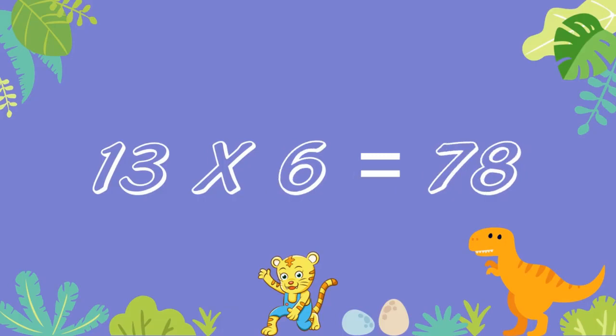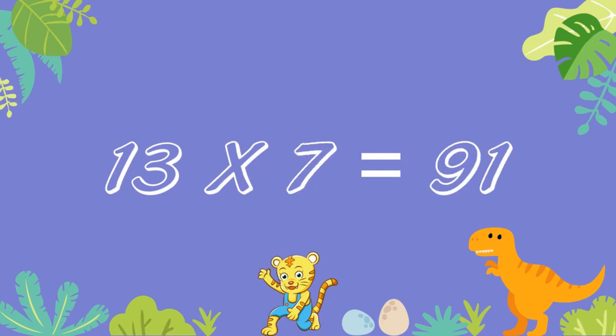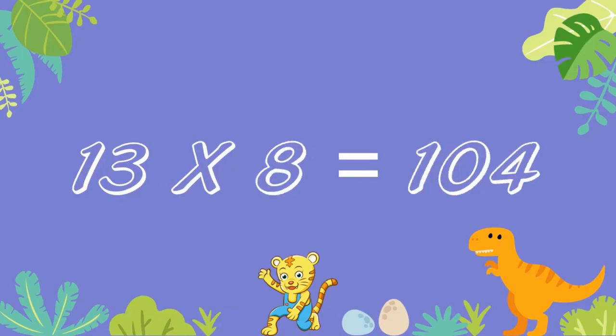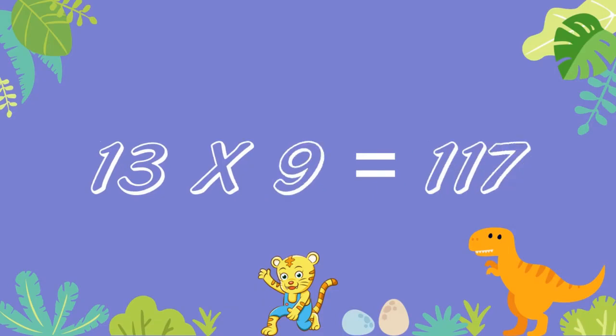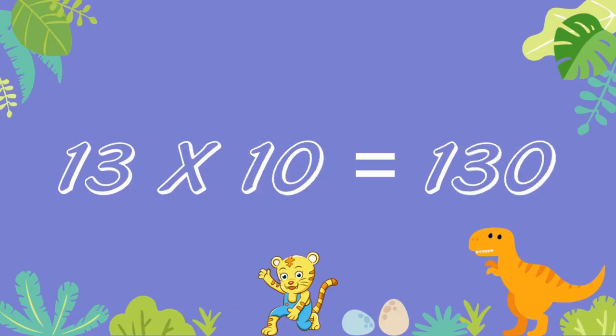13 sixes are 78. 13 sevens are 91. 13 eights are 104. 13 nines are 117. 13 tens are 130.